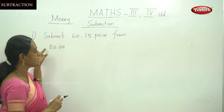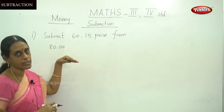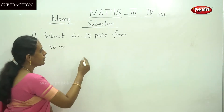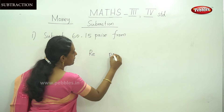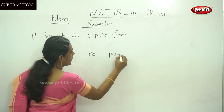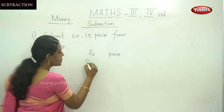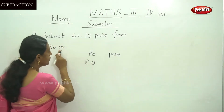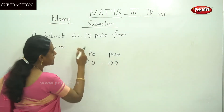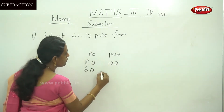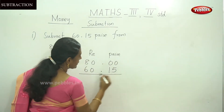From means this is a bigger number. So you should write the bigger number at the top of the subtraction. You have to separate the number by column — that is Rupees and Paise. Write down the first number; this one is a bigger number, so write 80, with no Paise at all, so put 0. And below write 60 Rupees and 15 Paise.